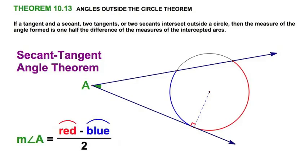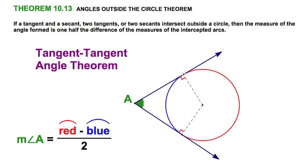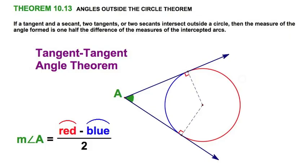Here's the tangent tangent. Same thing. The only difference here with the tangent tangent, you notice that the red arc and the blue arc compose the whole circle. So, this one is going to have a shortcut later on. We'll look at that next section, but red minus blue divide by 2 still works.